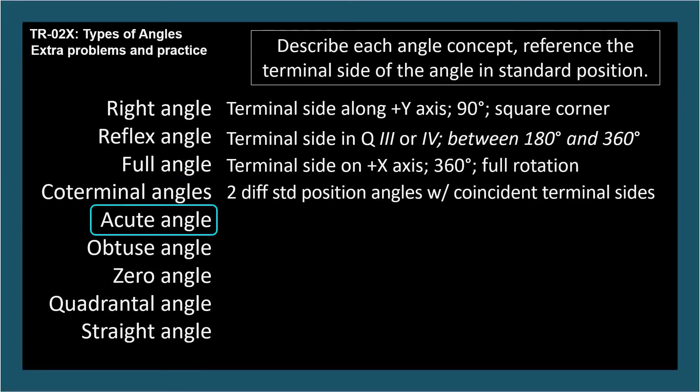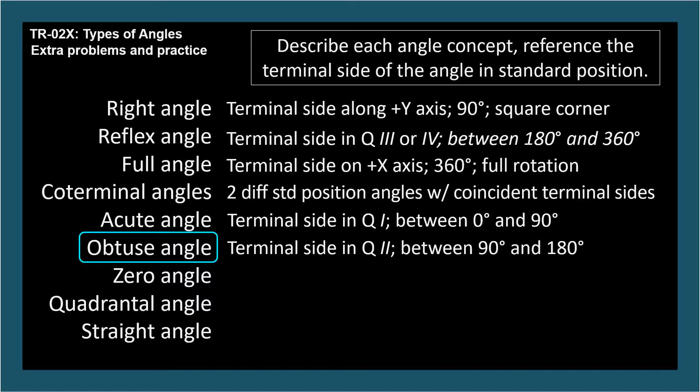Acute Angle: The terminal side is in quadrant 1. The angle is between 0 and 90 degrees. Obtuse Angle: The terminal side is in quadrant 2. The angle is between 90 and 180 degrees.